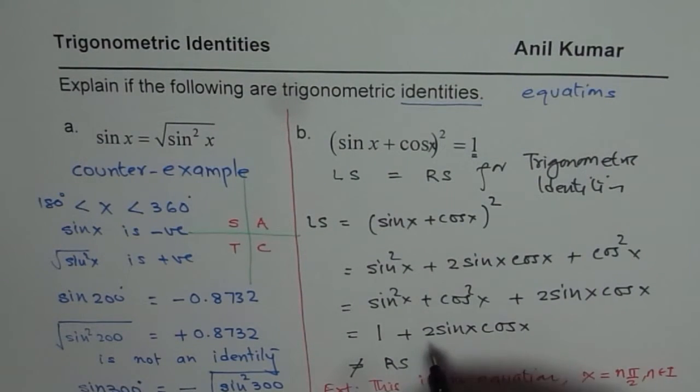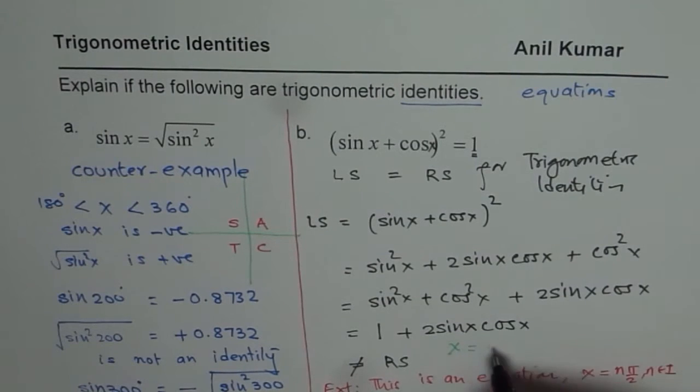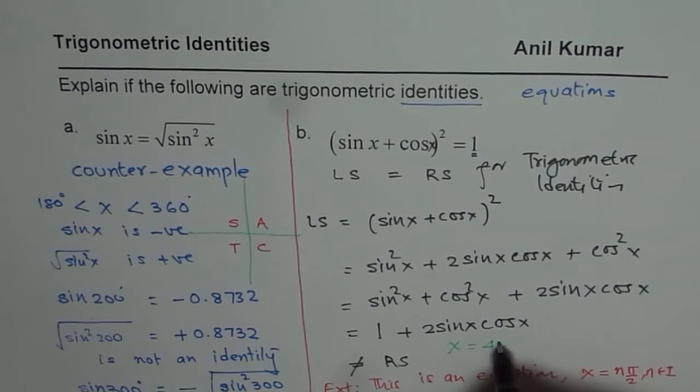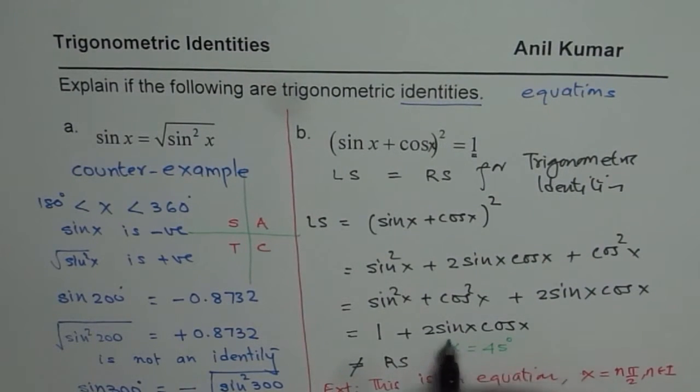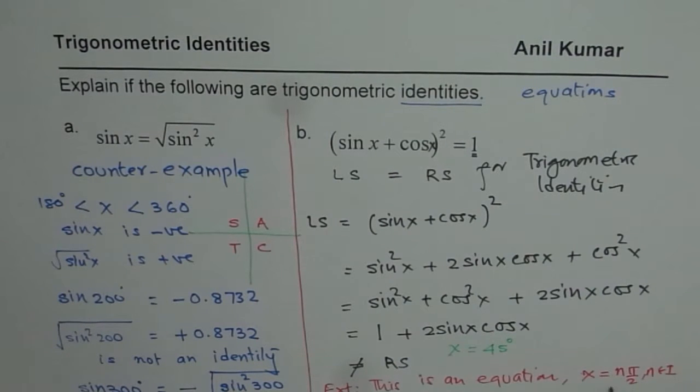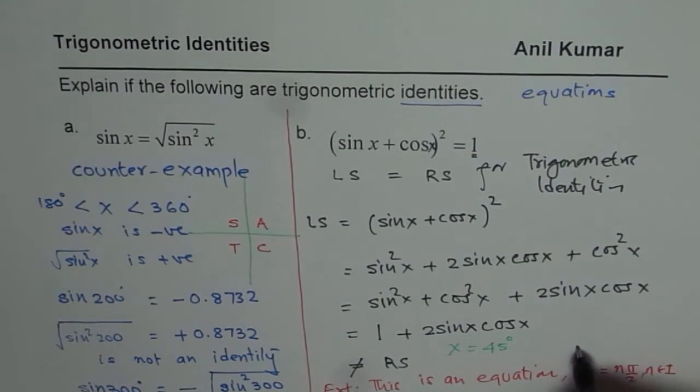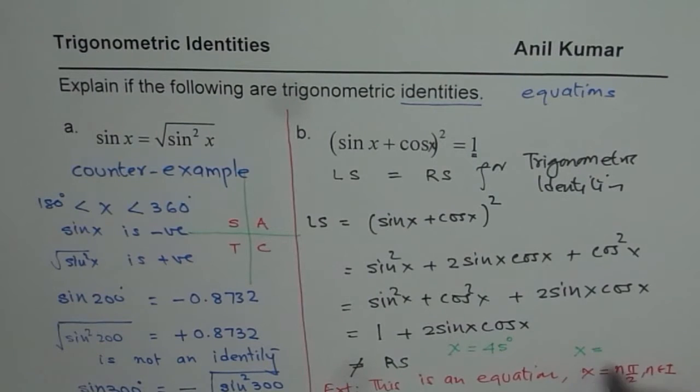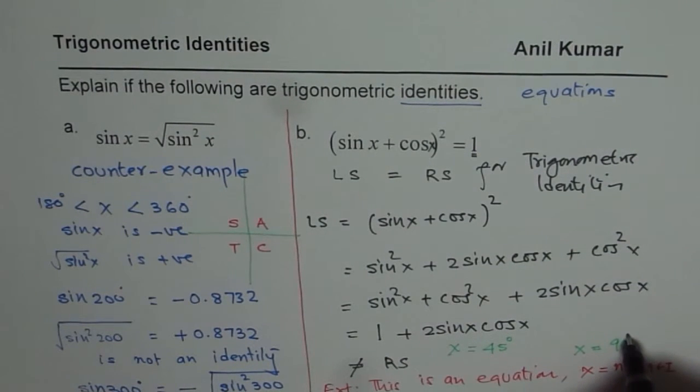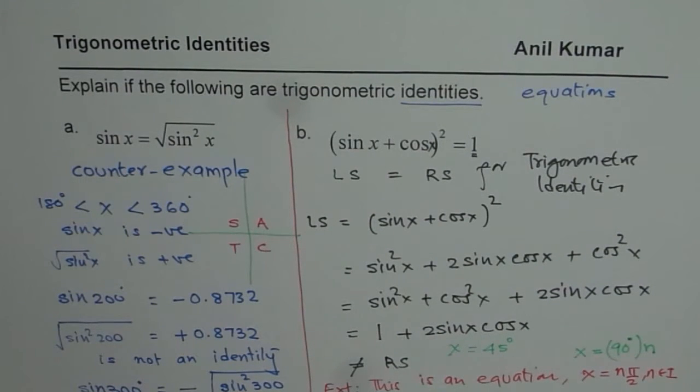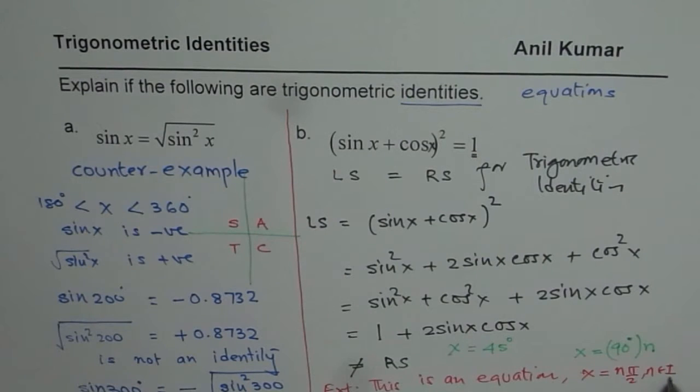For a counter example, you can take x equals to 45 degrees. In that case, I should have written, for some students who are not doing radians, I should have written x equals to 90 degrees times n, where n belongs to integers. So it is not true for, it is true for only values like 0, 90, 180, 270, 360, all those values.